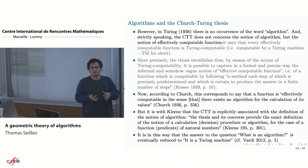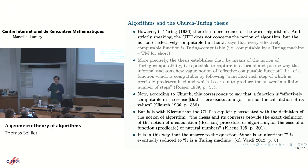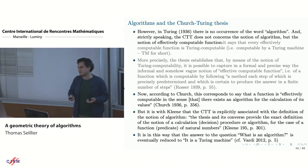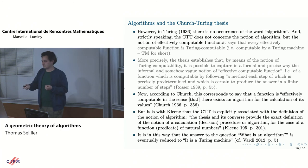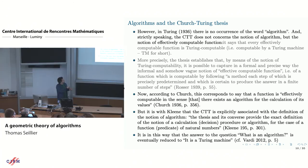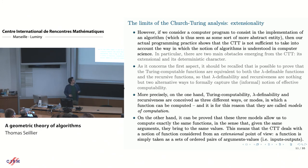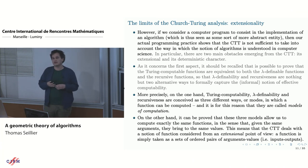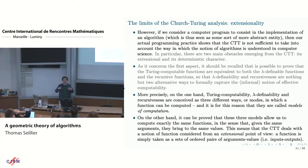Turing's paper presents three different ways of defining what an effectively computable function is, and these three are equivalent. It says something about the functions — the sets of functions you compute in each model is the same — but it's not about how you compute it. Some people say that an algorithm is a Turing machine, but we don't agree. We see Turing computability, lambda definability, and recursiveness as three different models of computation that define the same set of functions.